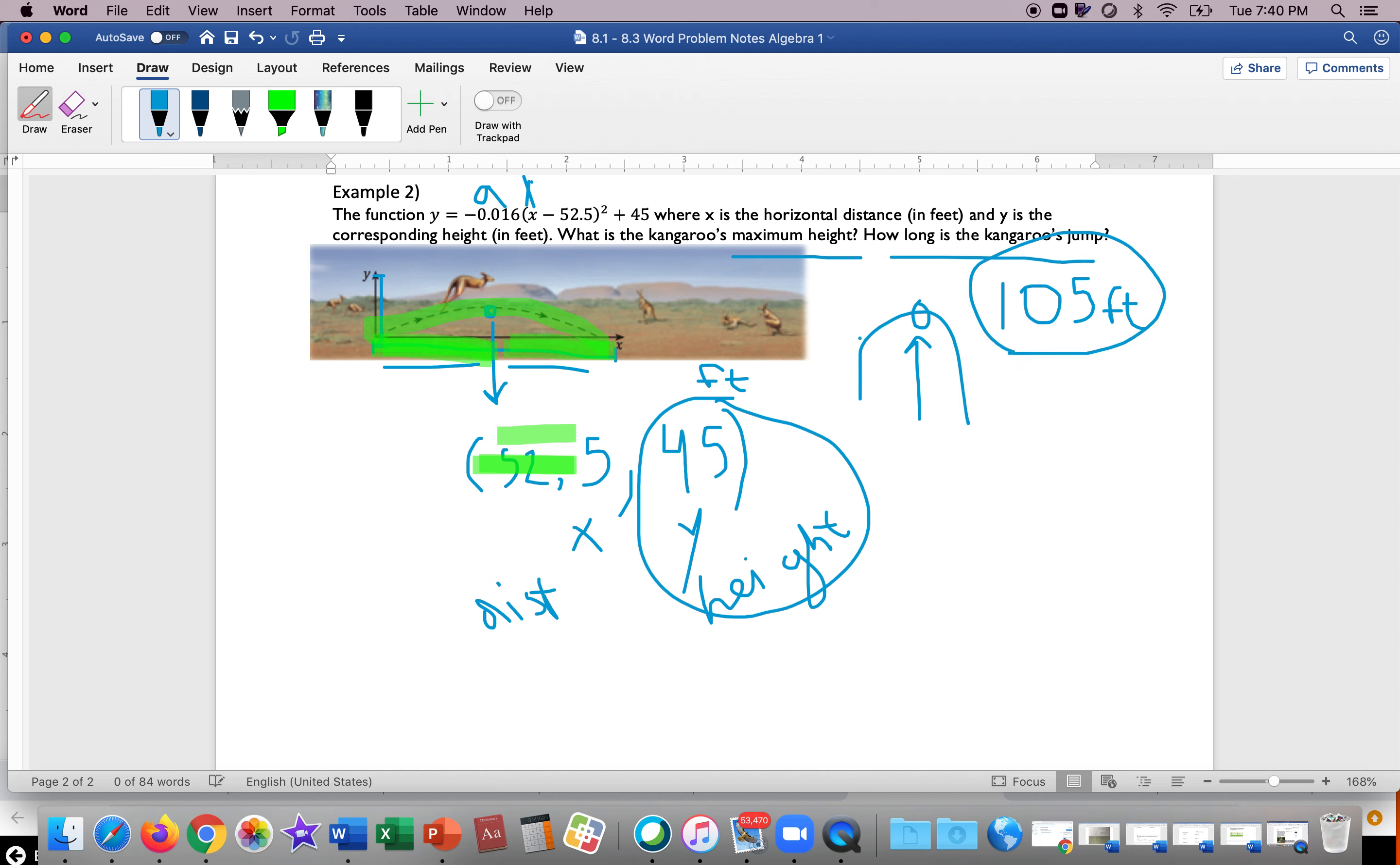Now something again I want to point out. We said that the kangaroo's max height was 45 feet, and we use the word max because when you look at this parabola, since the a-value is negative, it looks like this picture right here. So the vertex is the highest point or the max. But if your parabola looks something like this, like a U, your vertex would actually be the lowest point.